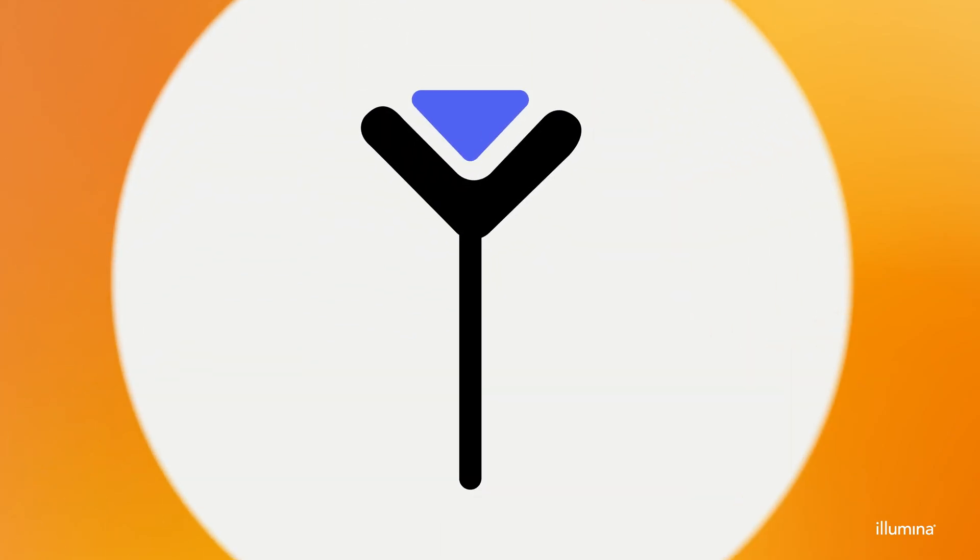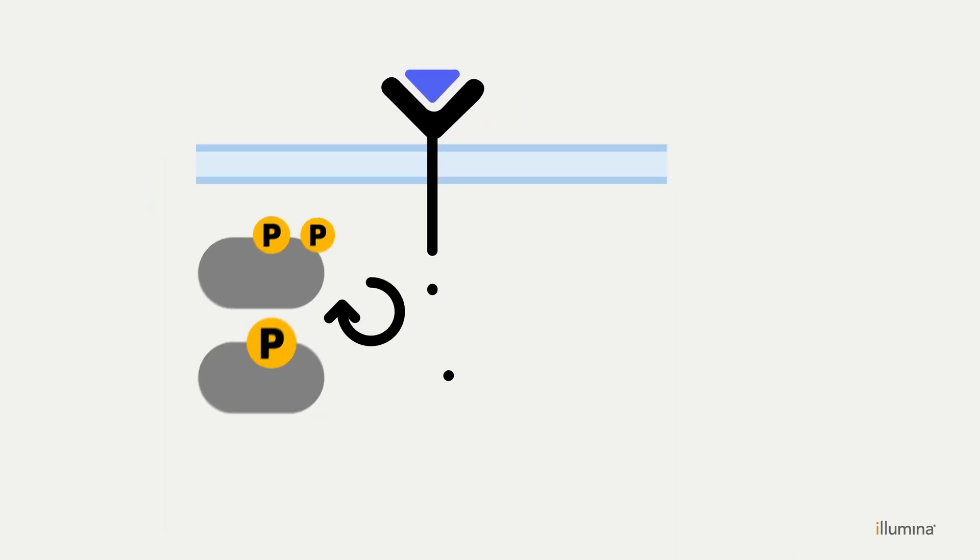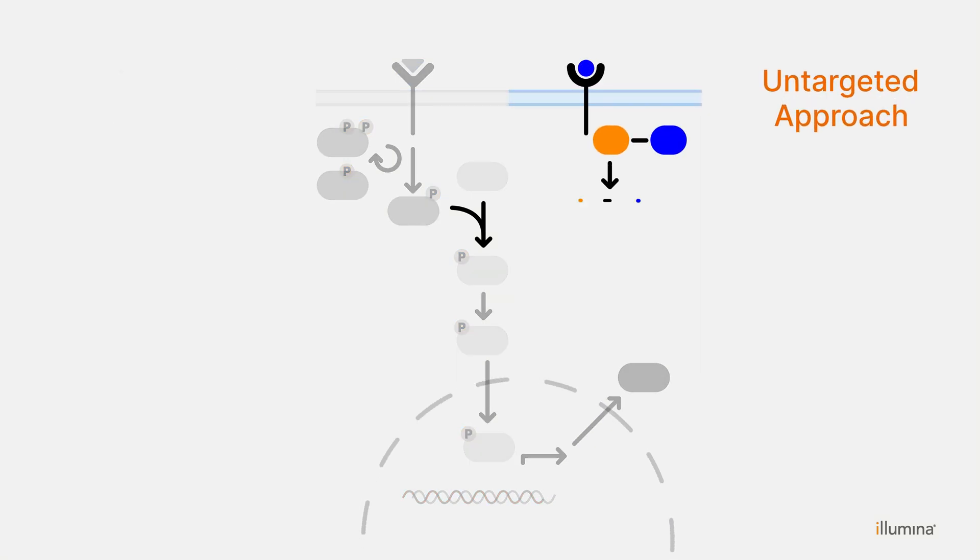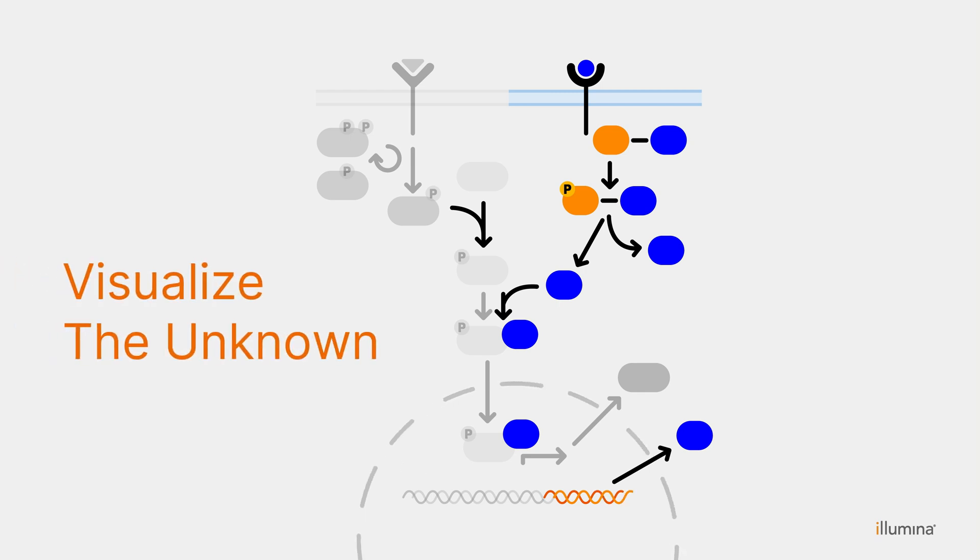Every research project begins with a question. Instead of interrogating your question using targeted approaches that focus on previously characterized molecules, an untargeted approach, powered by next-generation sequencing, can help you visualize the unknown.